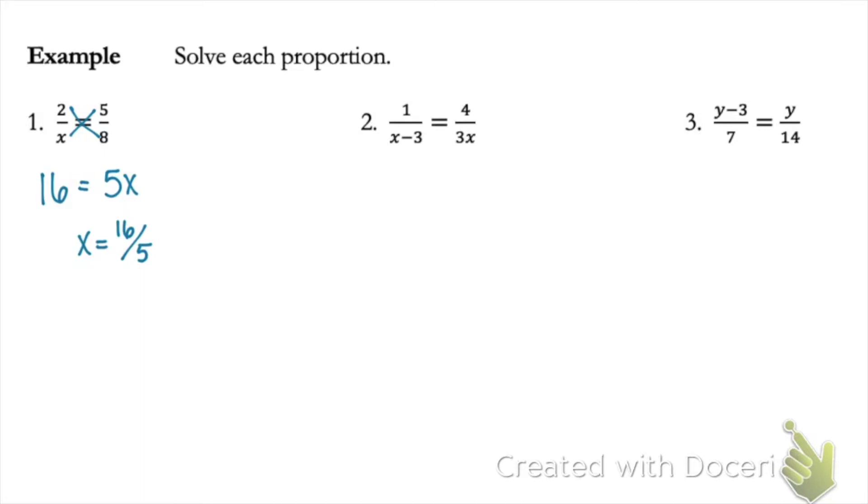Problem two, same idea. This time we're going to have a little bit of distribution here whenever we multiply the four and the X minus three. So we'll distribute the four, and then again, just solve the equation like you would normally.